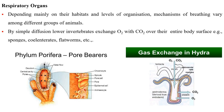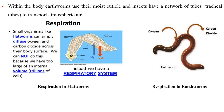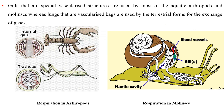Respiratory organs vary among different groups of animals depending mainly on their habitats and level of organization. Lower invertebrates such as sponges, cnidarians, and flatworms exchange oxygen with carbon dioxide over their entire body surface by simple diffusion. Earthworms use their moist cuticle, while insects have a network of tubes to transport atmospheric air. Most aquatic arthropods and mollusks use gills, which are special vascularized structures, whereas terrestrial forms use lungs, which are vascularized bags, for the exchange of gases.